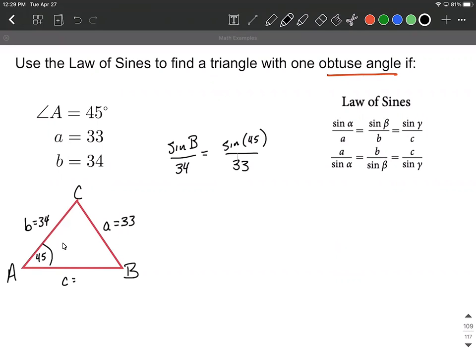All right, with a little bit of manipulating this, we're going to isolate the sine of B by multiplying both sides by 34. So that'll end up in the numerator on the right hand side. We'll have sine of B equals 34 times sine of 45 divided by 33.